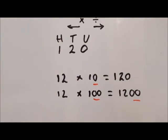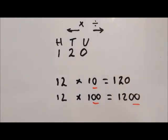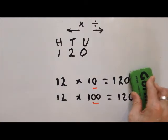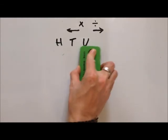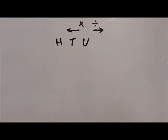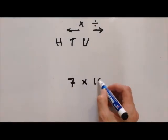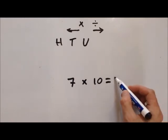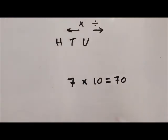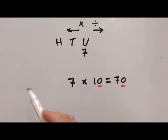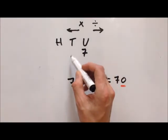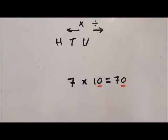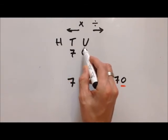Let's do this again with another number and then move on to dividing. Let's say we have the number 7 times 10. If you know your times tables, you'll know the answer is 70, and like I said, the zero method — adding the zero — does work. So in our columns: there's our 7, we're multiplying which means we go left, there's one zero so we go left one place. We end up with our 7 in the tens column and we put our zero in the units column.